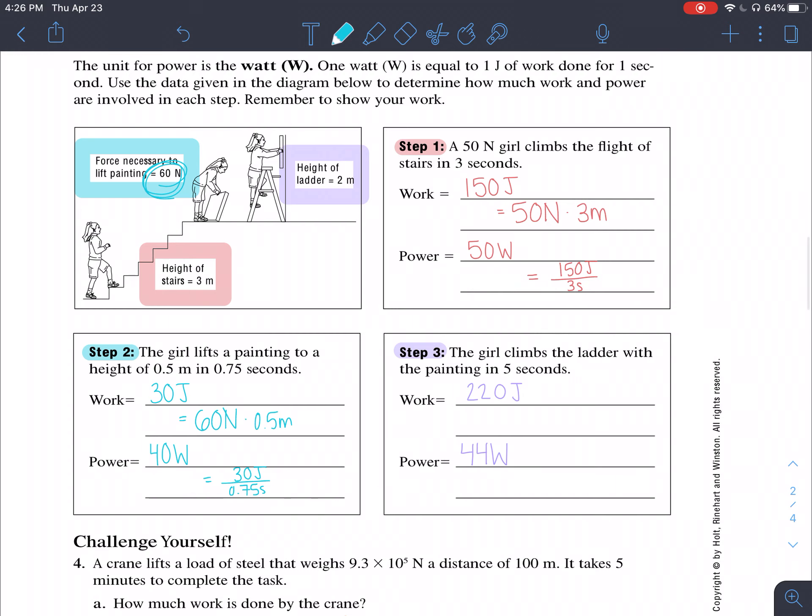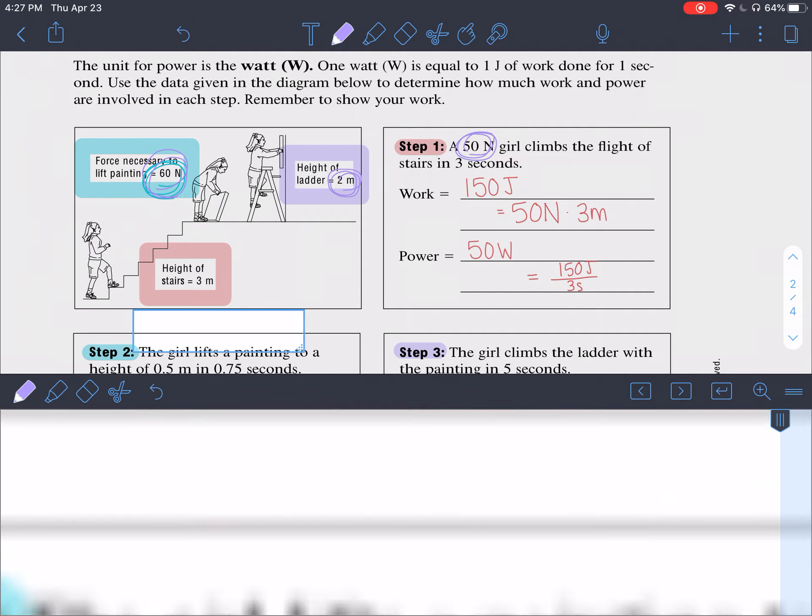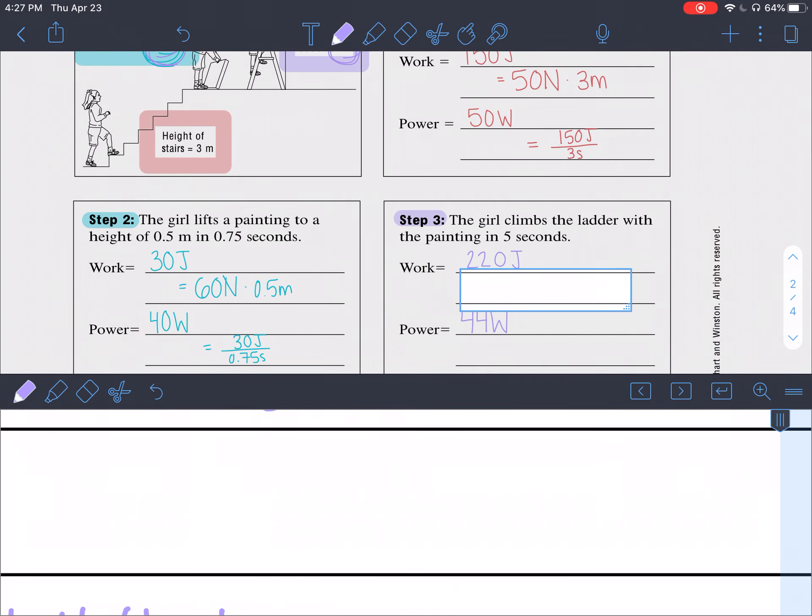Last one in the set, girl climbs the ladder with the painting in five seconds. We are only given the displacement here of her lift or the height of the ladder. We aren't given a force directly but we do have the force. So the girl is now climbing the ladder and she's holding the painting. Therefore we have the force of the girl plus the force of the painting. That is going to be the total force to calculate work here.